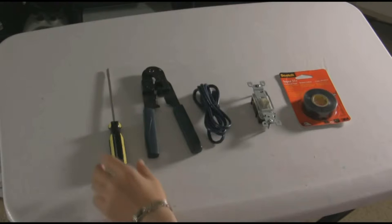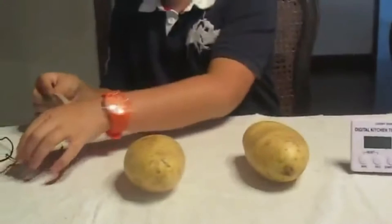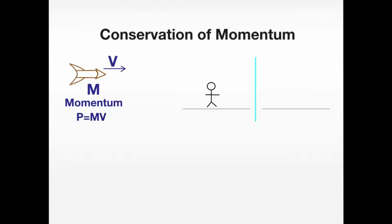The first thing you are going to need is a screwdriver. And finally the last thing you need is a roll of duct tape. Oh, I almost forgot — you also need a digital kitchen timer, as well as two potatoes and two cards with the numbers 1 and 2 on them.